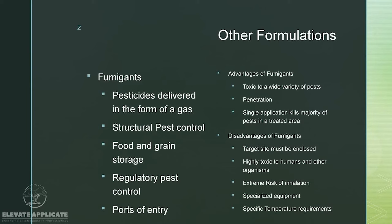Fumigants are pesticides delivered in the form of a gas. Their main uses are structural pest control, food and grain storage, and regulatory pest control — a common way to kill foreign pests at ports of entry. Advantages: toxic to a wide variety of pests, they penetrate, and a single application kills the majority of pests in the treated area. Disadvantages: the target site must be enclosed, they're generally highly toxic to humans and other organisms, extreme risk of inhalation, require specialized equipment, and possibly specific temperature requirements.